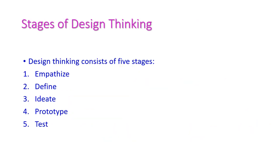Let us discuss the various stages of design thinking. Design thinking consists of five stages: first, empathize; second, define; third, ideate; fourth, prototype; and fifth, test.